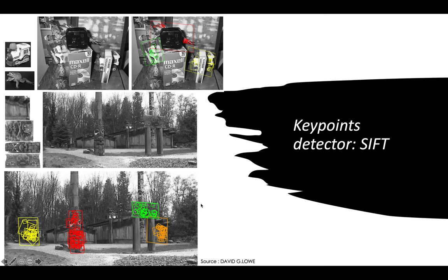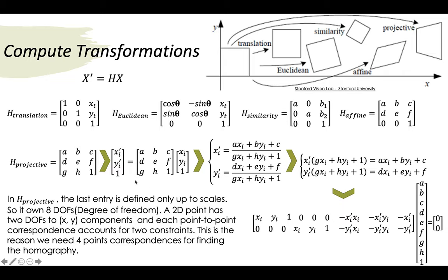Next, we discuss computing transforms. If we want to stitch two images, we need to apply different transformations: translation for basic shifts, similarity for scale differences, affine for distortion, and projective for changes in viewing angle. We list all the transform matrices and focus on the projective transform and the homography matrix.